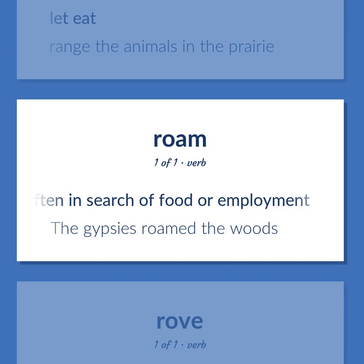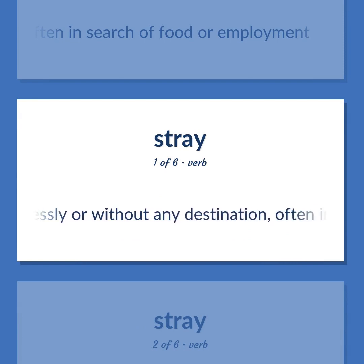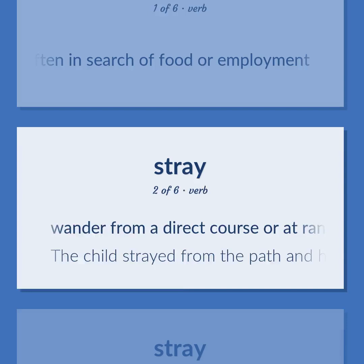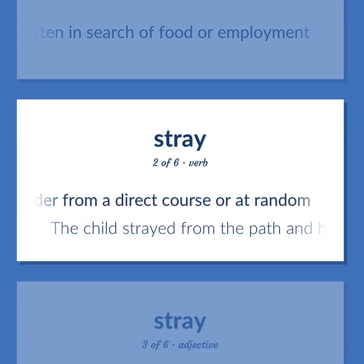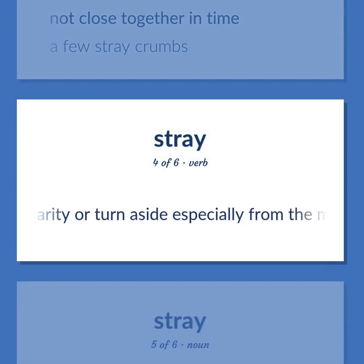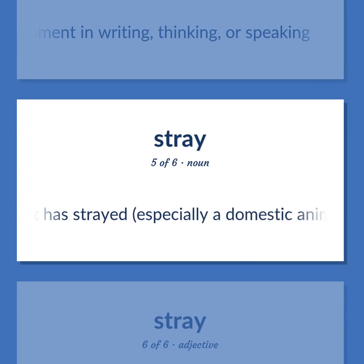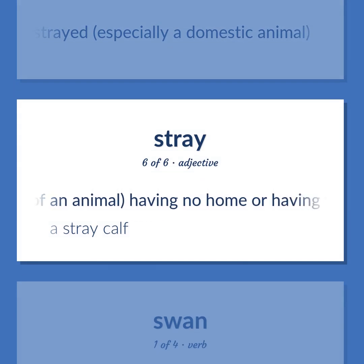Roam: Move about aimlessly or without any destination, often in search of food or employment — the gypsies roamed the woods. Stray: Move about aimlessly or without any destination, often in search of food or employment. Wander from a direct course or at random — the child strayed from the path and her parents lost sight of her. Not close together in time — a few stray crumbs. Lose clarity or turn aside especially from the main subject of attention or course of argument in writing, thinking, or speaking. An animal that has strayed, especially a domestic animal. Of an animal, having no home or having wandered away from home — a stray calf.